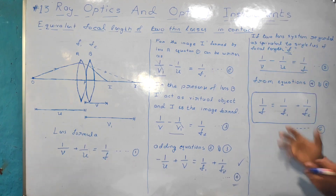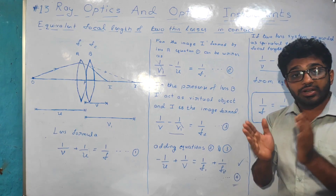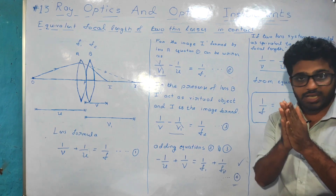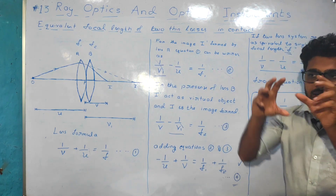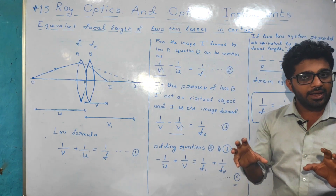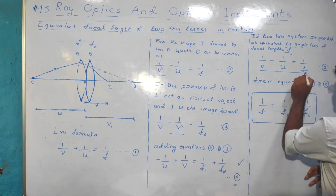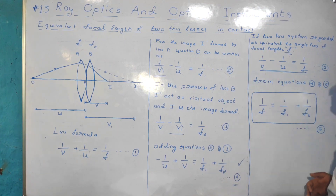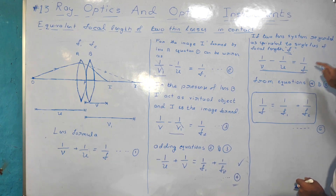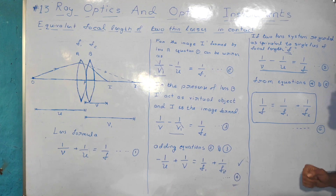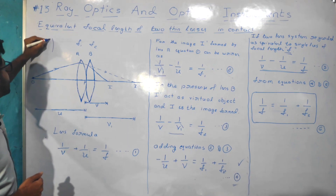If two thin lenses are kept in contact, their combination is considered as a single equivalent lens. So the lens formula for the equivalent single lens gives: 1 by v minus 1 by u is equal to 1 by F. This is equation number 5.